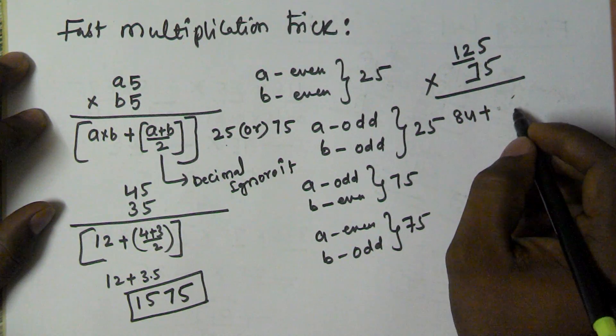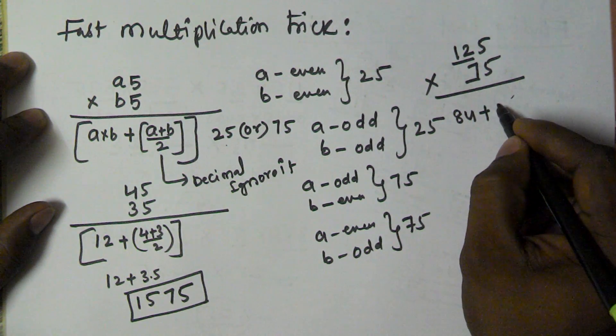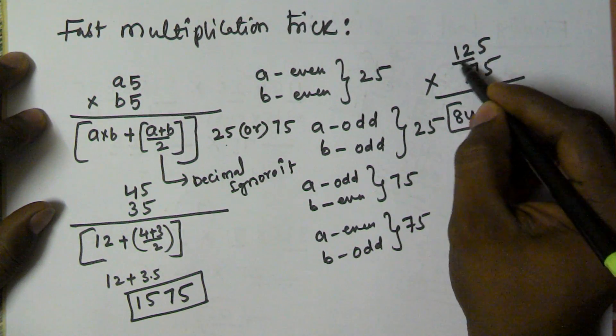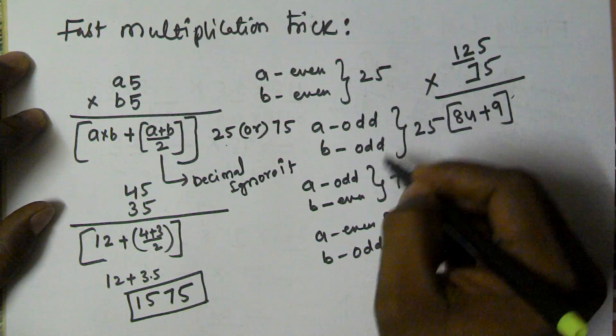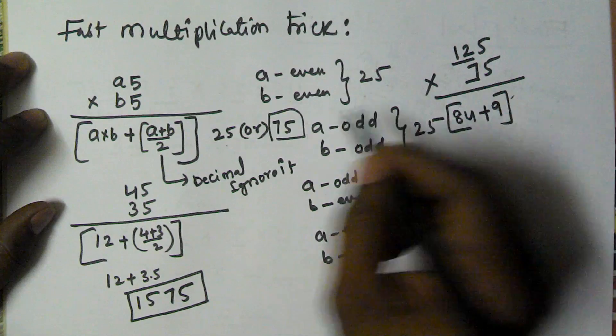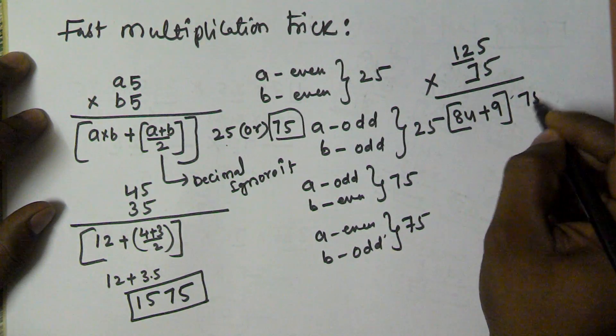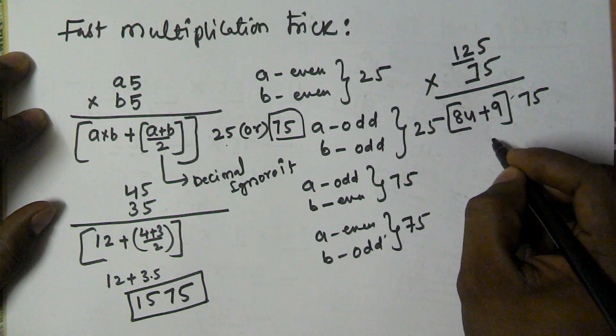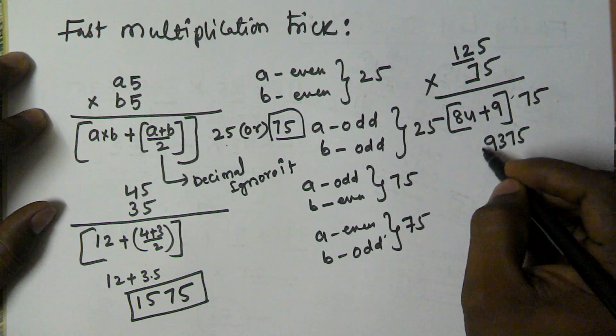9.5, so we have to ignore the decimal point, so I am taking only 9. And 12 is even and 7 is odd, so if it is even and odd, the last two we are getting is 75. So 84 plus 9 is 93 75.